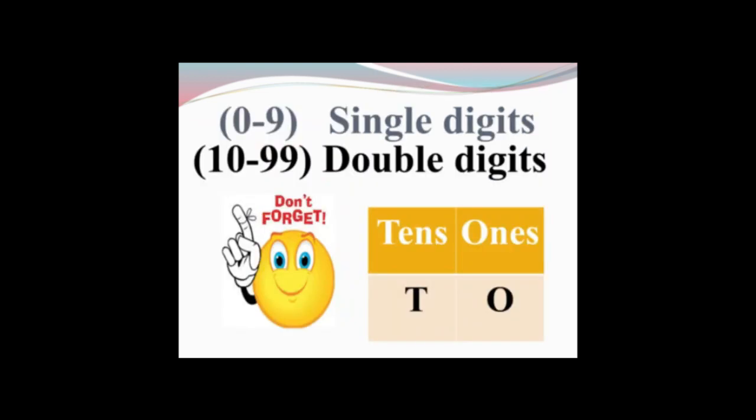We have different numbers. From 0 to 9 we have single digits, and from 10 to 99 we have double digits. So where do we write these numbers? Here you can see there are two columns: ones and tens. O stands for ones, T stands for tens. Ones comes on your right side and tens comes on your left side. Single digits we write under the ones column.